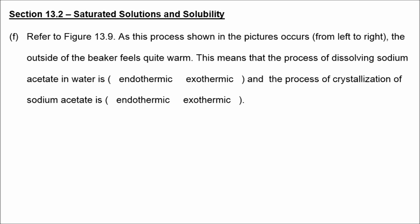The beaker or flask becomes quite warm when sodium acetate crystallizes, meaning that dissolving sodium acetate in the first place was endothermic, and the reverse — crystallization, the forming of solid sodium acetate — is exothermic. One application is these little gel packs containing supersaturated sodium acetate that serve as hand warmers. You squeeze a corner of the bag, initiating rapid crystallization, and it gets warm for a few minutes. Then you can pop it in the microwave, re-dissolve the salt, and reuse these packs over and over again.